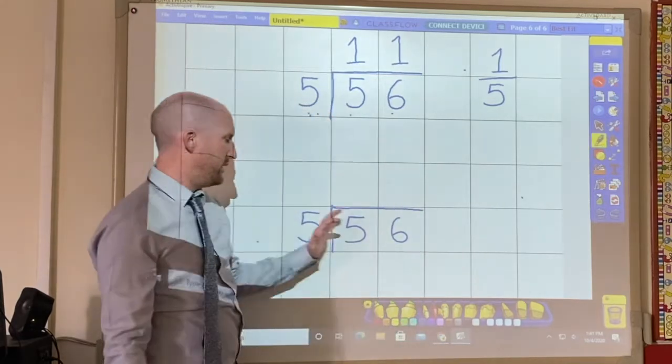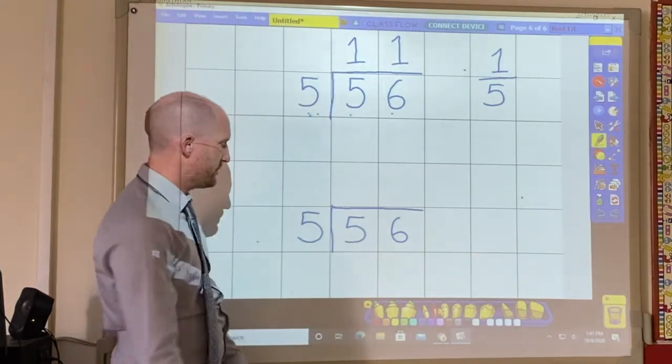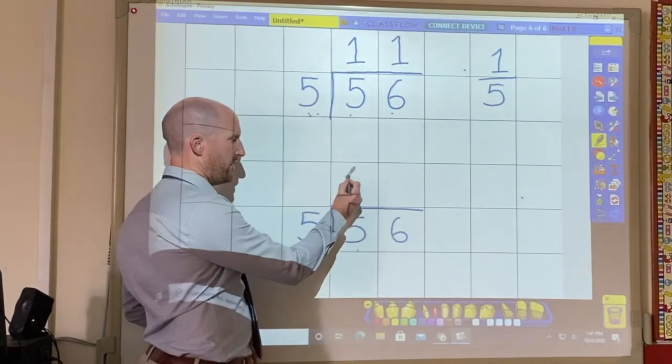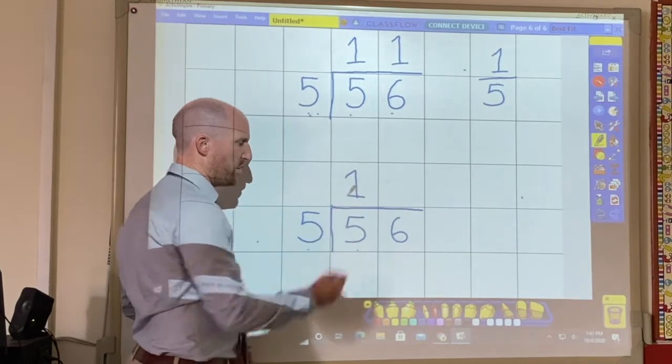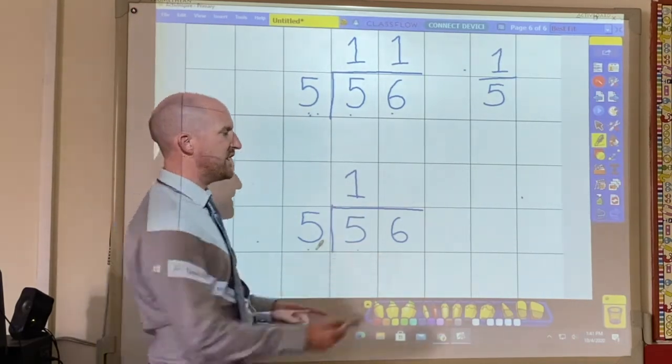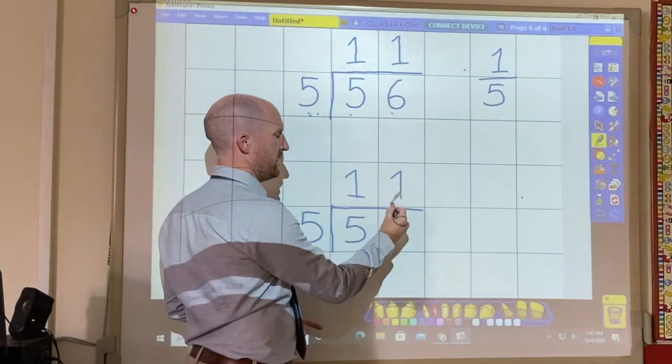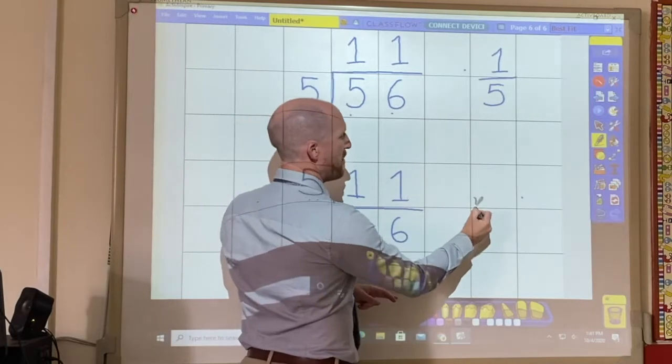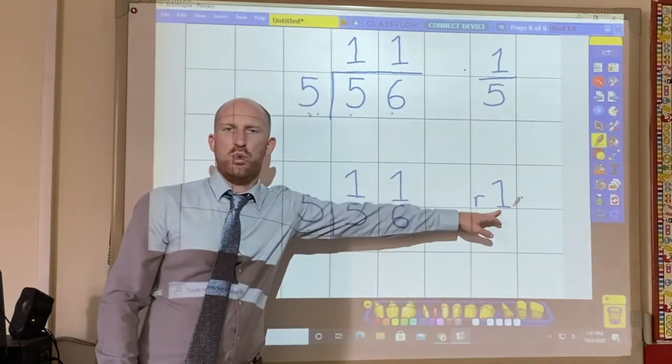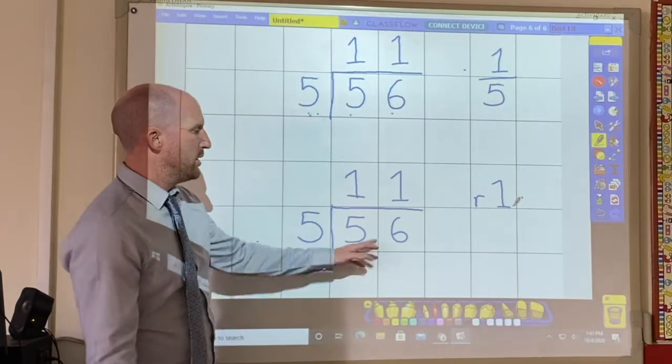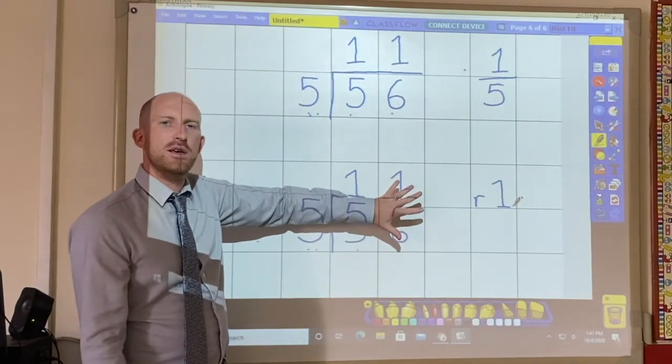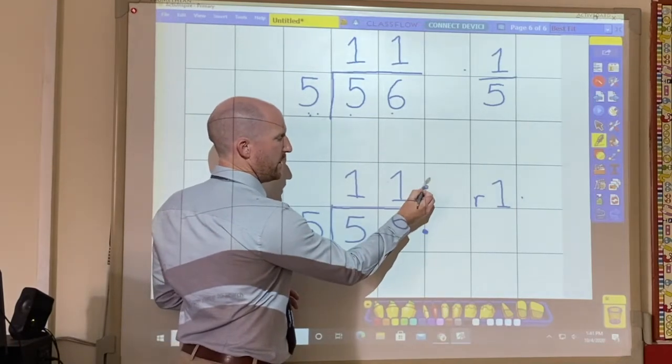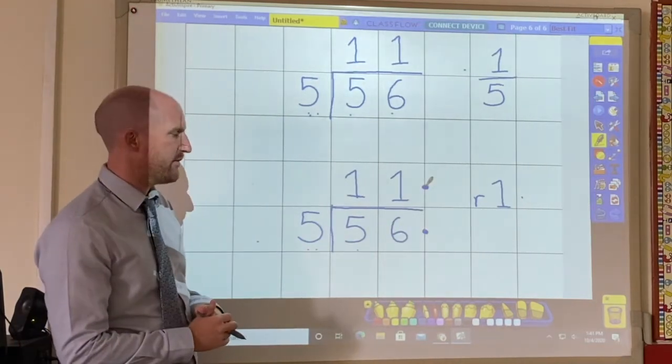So to work out your answer as a decimal, I'm going to do the remainder 1 again. So watch what I do this time. When you want to work out the decimal answer, first of all you need to put 2 decimal points.